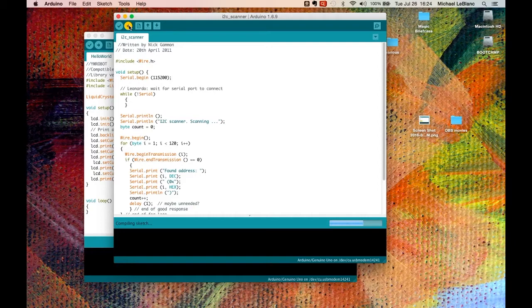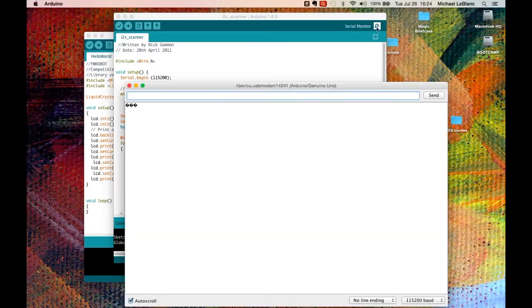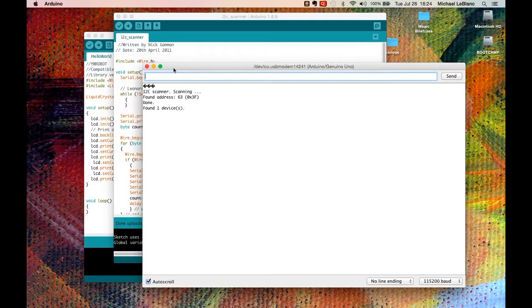Upload. Once it's finished we'll open the serial monitor here. Make sure we're using 115200 baud and all it does is it scans the two address pins and finds the address number 63 which is 0x3F which is the hexadecimal expression. The way you express hexadecimal is with a 0x3F.